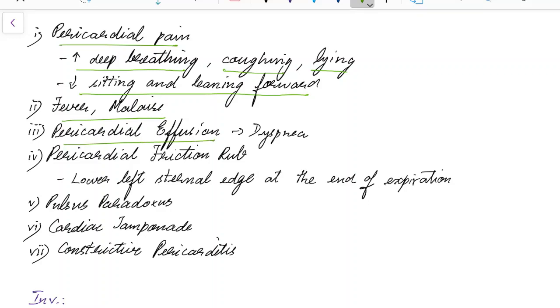If there is pericardial effusion as a complication of acute pericarditis, there will be dyspnea. On auscultation we can hear pericardial friction rub in acute pericarditis. It is best heard in the lower left sternal edge at the end of inspiration. There will be pulsus paradoxus. There can be cardiac tamponade and constrictive pericarditis.